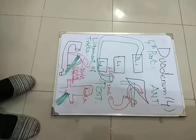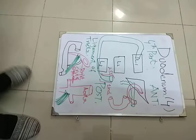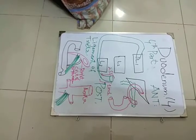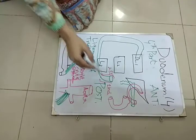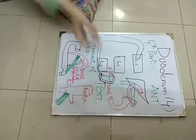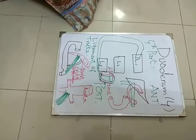The fourth part of the duodenum will be discussed and its relations. As we can see from this diagram, the fourth part of the duodenum is the last part of the duodenum. This is the fourth part of the duodenum, and it is also the shortest part of the duodenum.